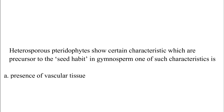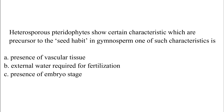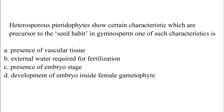Heterosporous pteridophytes show certain characteristics which are precursors to the seed habit in gymnosperms. One such characteristic is: Option A: presence of vascular tissue. Option B: external water required for fertilization. Option C: presence of embryo stage. Option D: development of embryo inside the female gametophyte. The correct answer is Option D — development of embryo inside the female gametophyte.